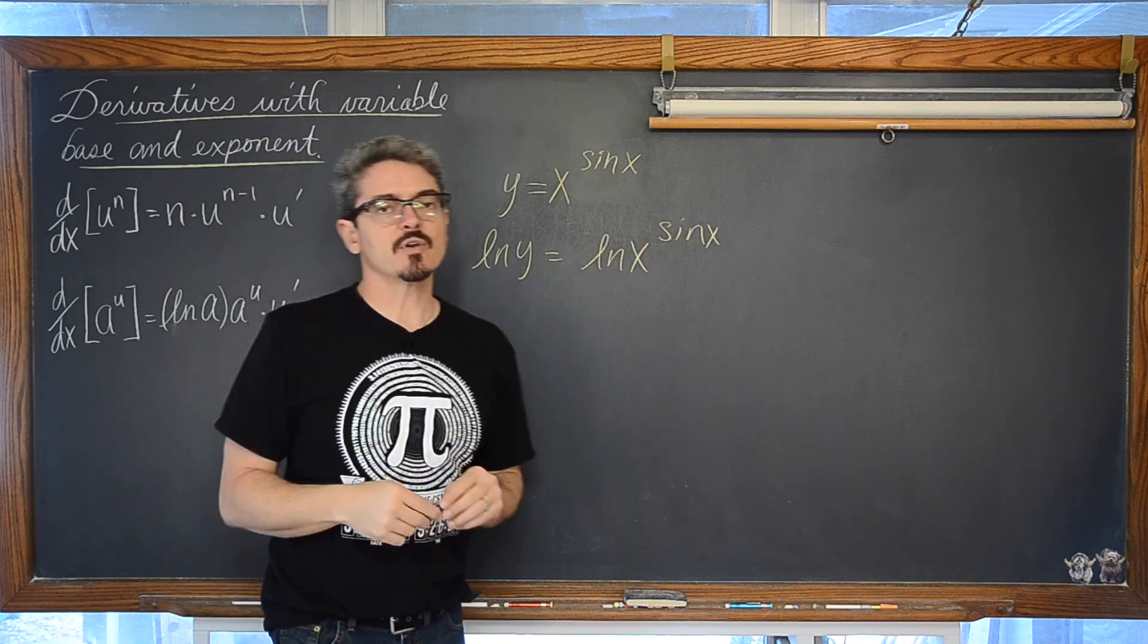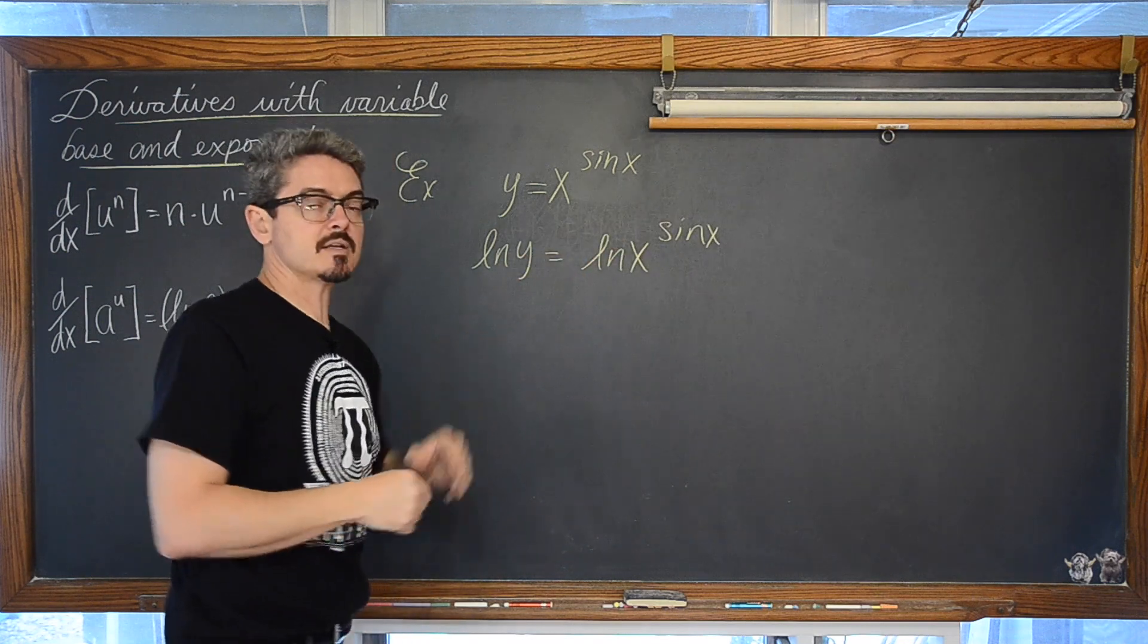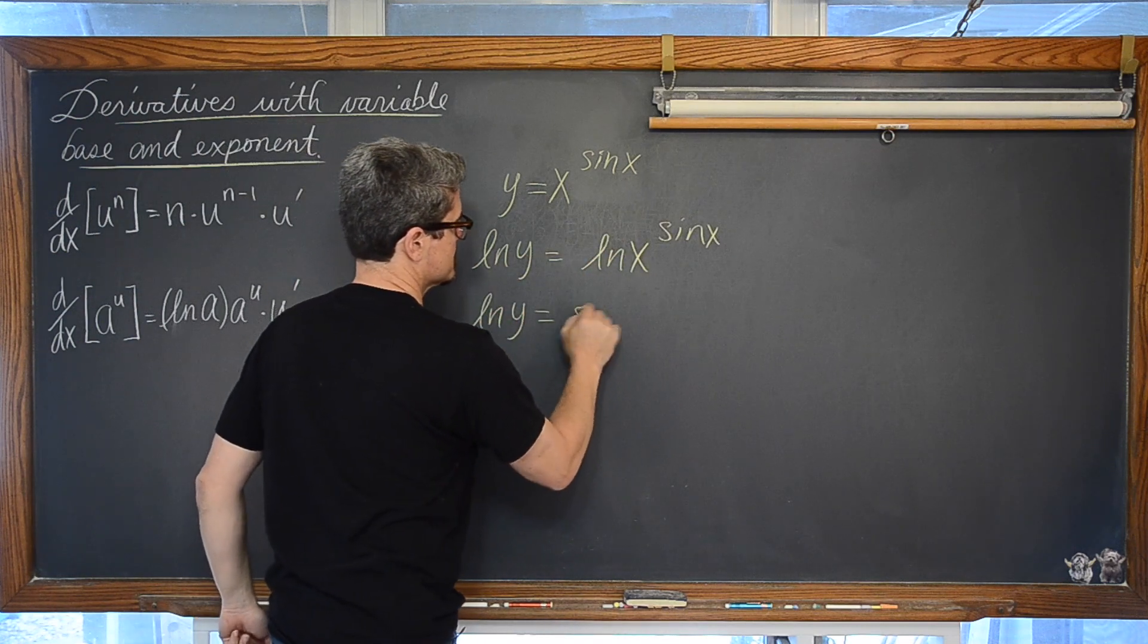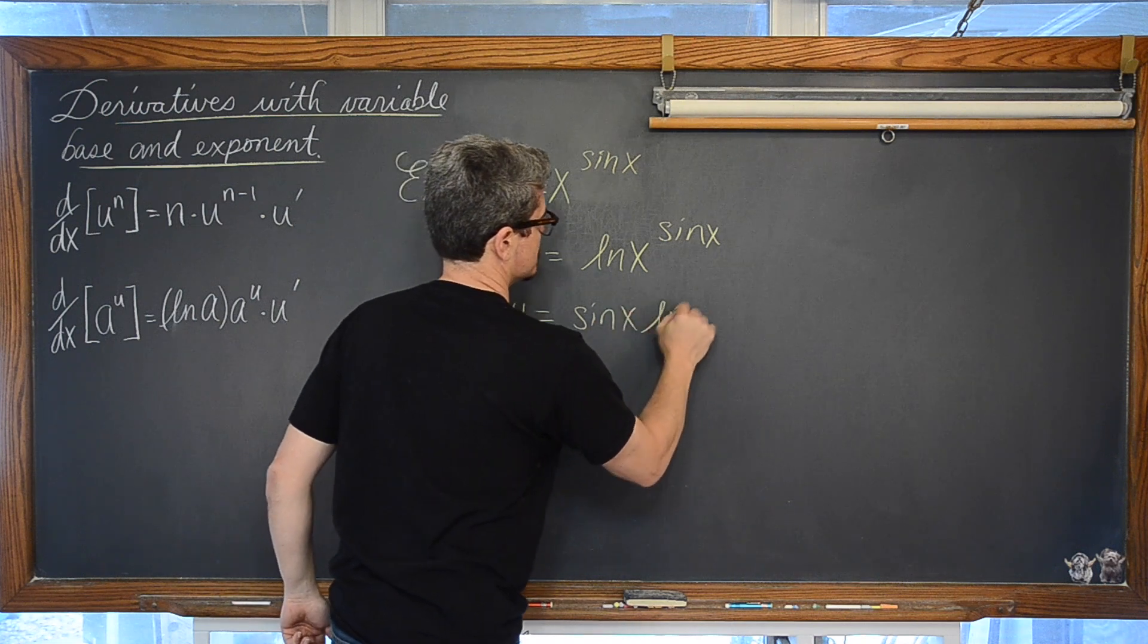Then remember that of course we get exponents from logarithms so we basically have an exponent raised by an exponent. So we are going to use the power property of logarithms to bring this sine of x out as a coefficient. Natural log of y is equal to the sine of x times the natural log of x.